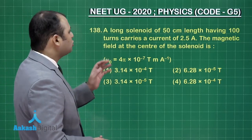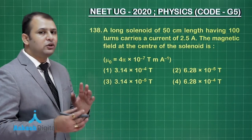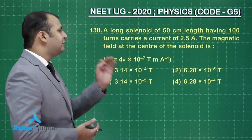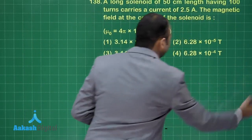Now this question number 138 belongs to chapter Moving Charges and Magnetism and this is again an easy formula based question. Let us see, a long solenoid of 50 centimeter length having 100 turns carries current 2.5 ampere. The magnetic field at the center of the solenoid is and it's a very simple formula based question.